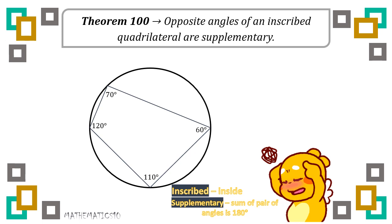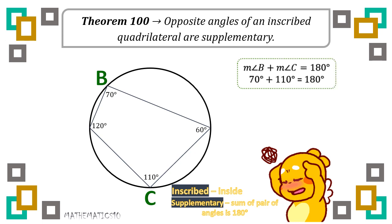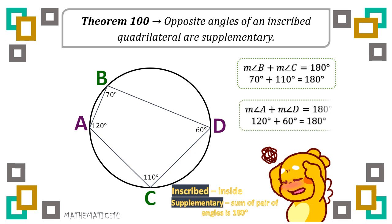You need to identify first which are our set of opposite angles. We have opposite angles B and C. Since it is supplementary, angle B is 70 degrees and angle C is 110 degrees, so they sum to 180 degrees — they are supplementary. And for another set, we have opposite angles A and D: 120 degrees for A and 60 degrees for D. So 120 plus 60 must be equivalent to 180 degrees always. Based on theorem 100, opposite angles of an inscribed quadrilateral are considered supplementary.